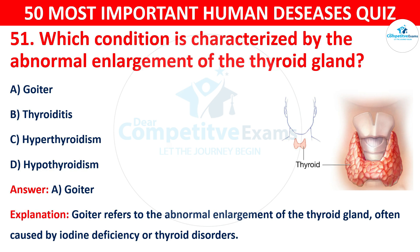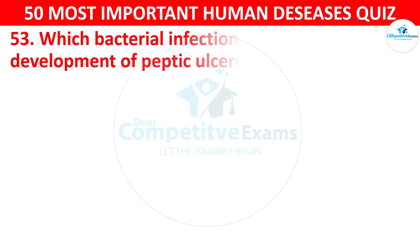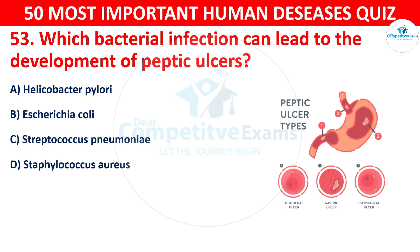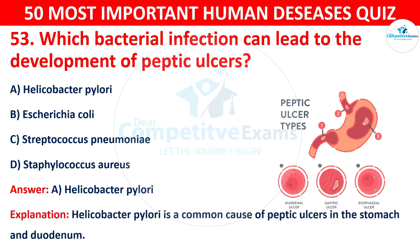Question 52: Which bacterial infection can lead to the development of peptic ulcers? The correct answer is B — Helicobacter pylori. Helicobacter pylori is a common cause of peptic ulcers in the stomach and duodenum.